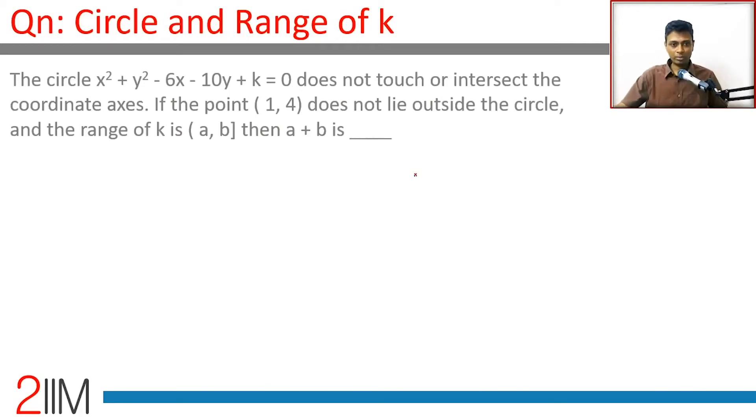The circle x² + y² - 6x - 10y + k = 0. I'm going to write this as x² - 6x + 9, y² - 10y + 25.